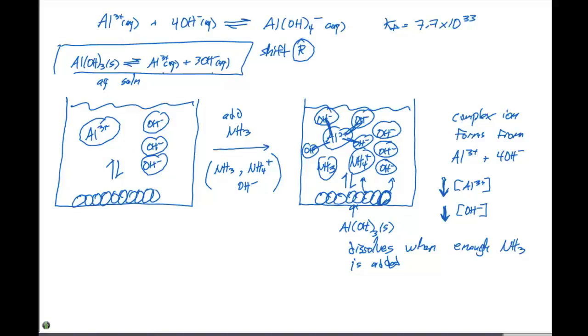Because the moment that this aluminum comes into contact with any of these hydroxides, since this KF right here is so high, it's gonna immediately form a complex ion. And that will drastically influence the solubility.